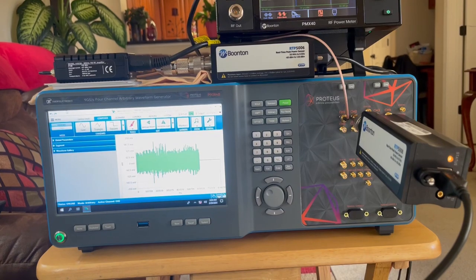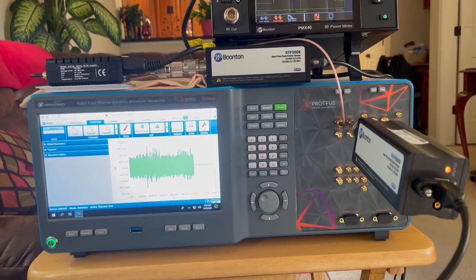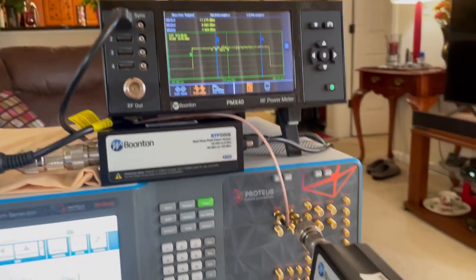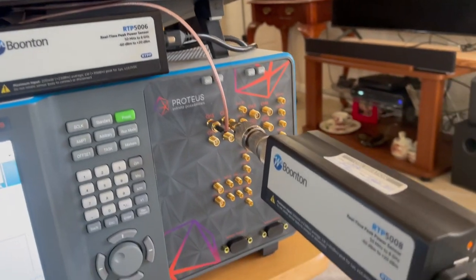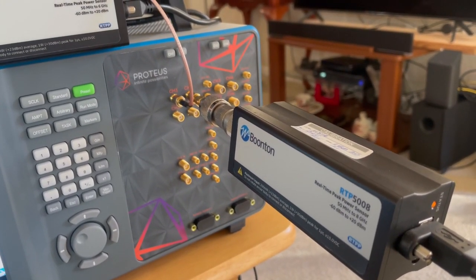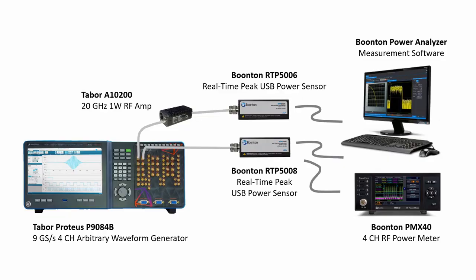The test setup shown here: Wi-Fi signals with 160 megahertz bandwidth are being generated and transmitted by the Tabor Proteus arbitrary waveform generator to the Bouton RTP5000 series peak USB power sensors.